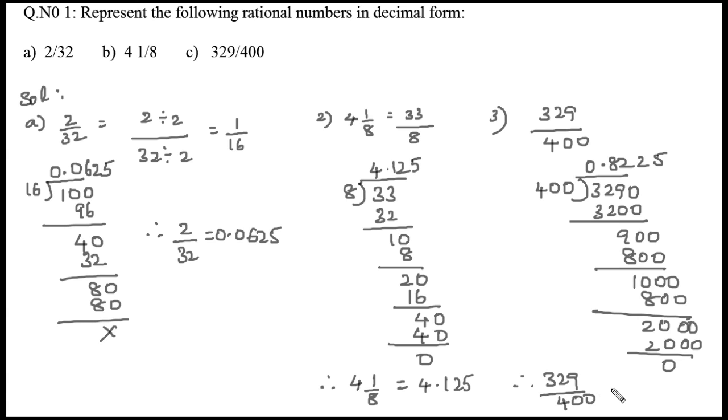From these examples we can understand that the division process terminates after a finite number of steps. Such type of representation is called terminating decimal representation. In the next session, we will discuss recurring decimals.